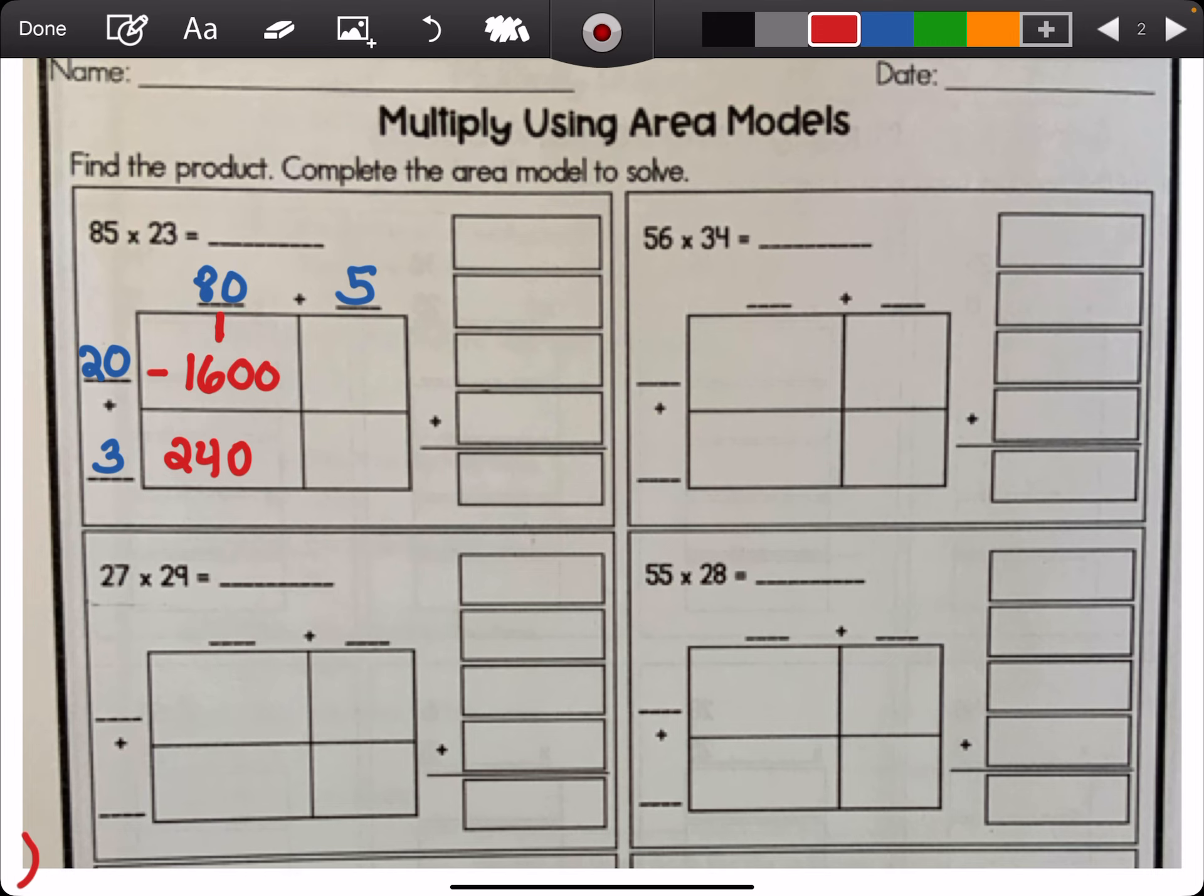Now we have the two other area blank partial products. 20 times 5, well, 2 times 5 is 10. One more zero is 100. And then 5 times 3 is 15. Now you're going to take your four partial products. You may be able to add them in your head, but right now I'm going to line them up and make sure I'm lining them up right on top of each other in the correct place values. And when I add these up, 5, 5, 9, and 1. 1,955.